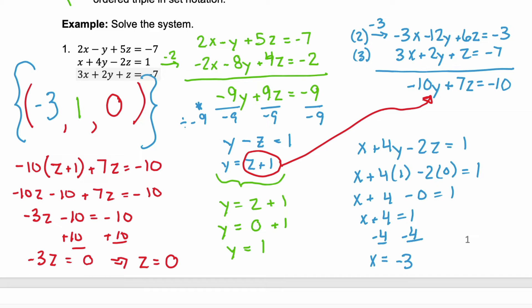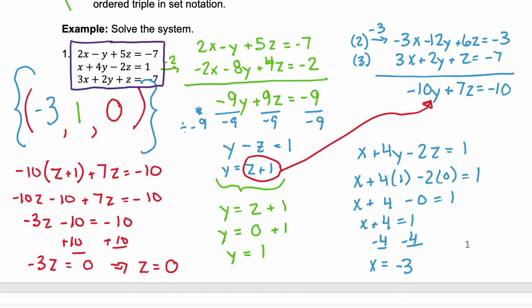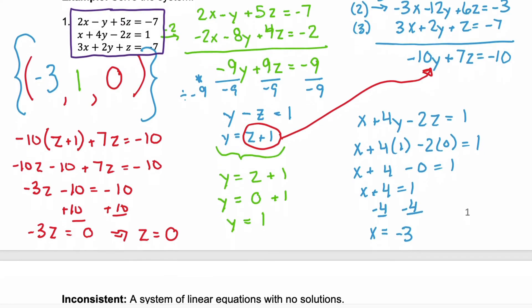Remember, you're putting this in as a solution set because you may have more than one ordered triple that's a solution — here we just have one. The very last step is to always check the ordered triple in the original equations. Come back to these three original equations and check that ordered triple in each of them, just like we did in the very first example. This ordered triple works — it checks for all three equations, so it is the correct solution.